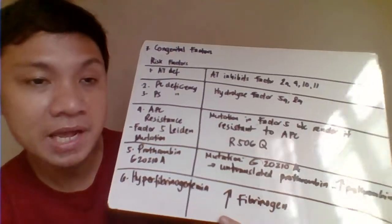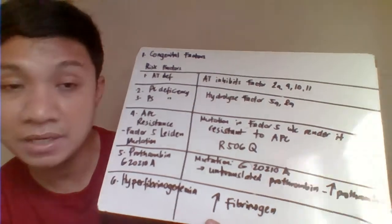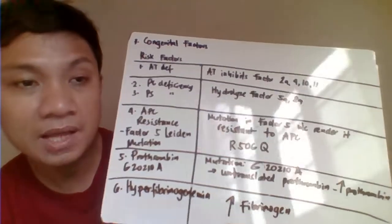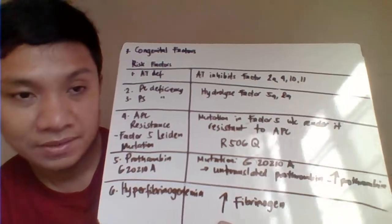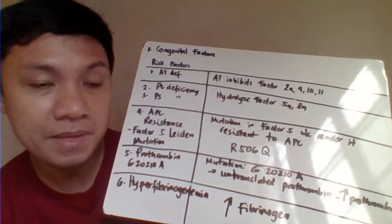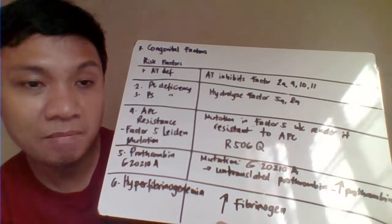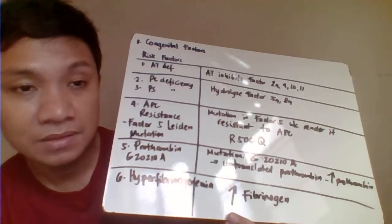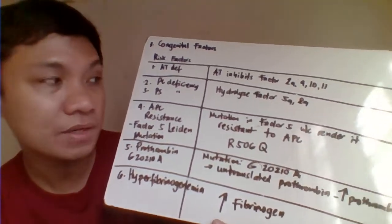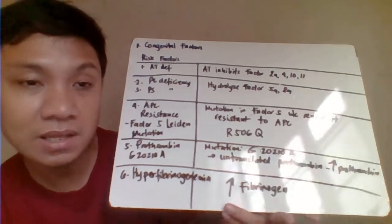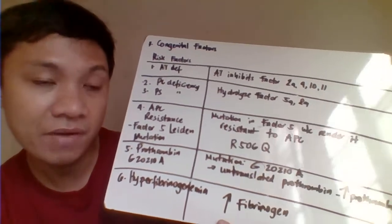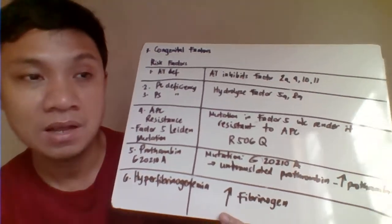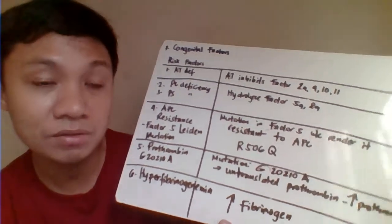Protein S and Protein C deficiency: the APC-protein S complex digests Factor V and Factor VIII. Without APC-protein S — due to deficiency — Factor V and Factor VIII are not digested and just keep promoting clot formation, resulting in thrombosis.